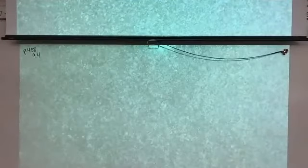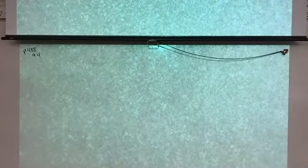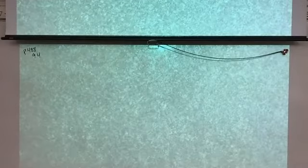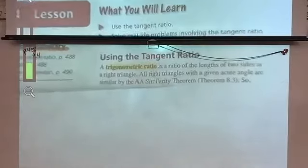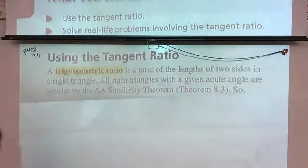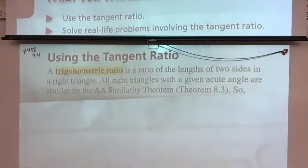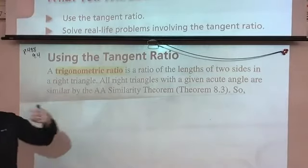Alright, so section 9-4 — we're really getting into trigonometry here. We've got half a chapter on trig now, but once you get into high school you'll be dealing with a whole lot more. Today and tomorrow we're talking about trigonometric ratios — trig ratios. Basically it's just the ratio of the lengths of two sides in a right triangle. A ratio is just a fraction, so we're creating a fraction based on specific side lengths.